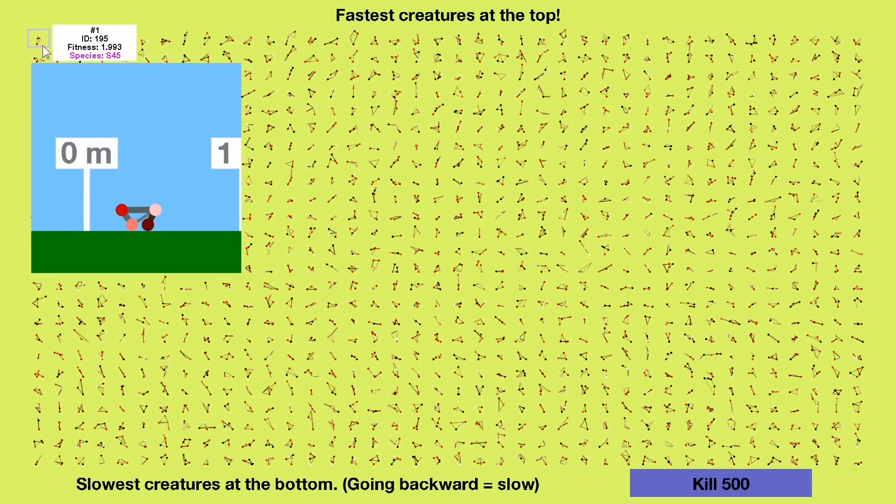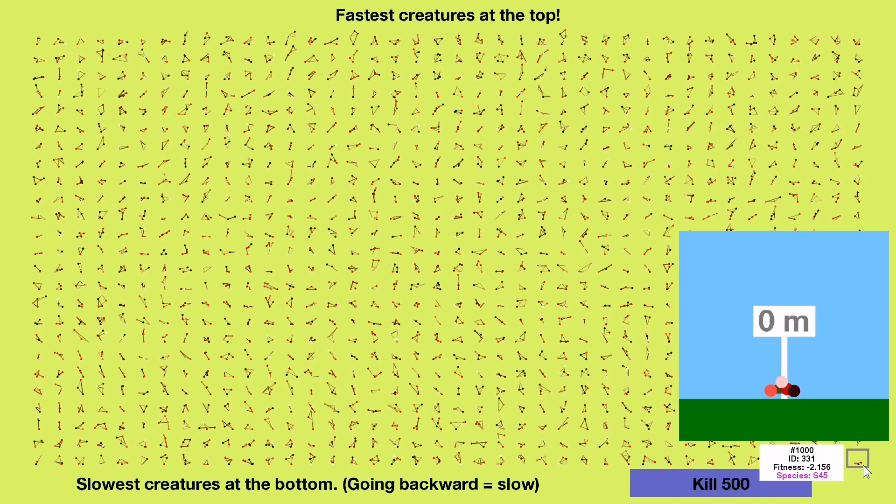Just watching it, though, you can tell that improvements can be made. Who was the slowest creature? Well, that's creature number 331, who traveled even further than the fastest creature, but backwards.